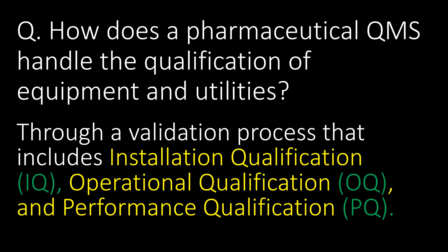How does a pharmaceutical QMS handle the qualification of equipment and utilities? Qualification of equipment and utilities is done through a validation process that includes installation qualification, operational qualification and performance qualification.